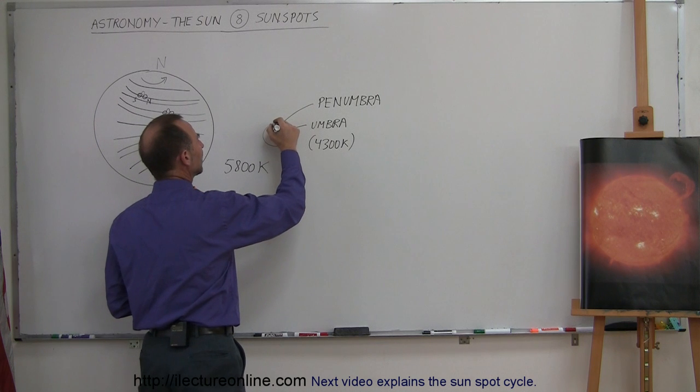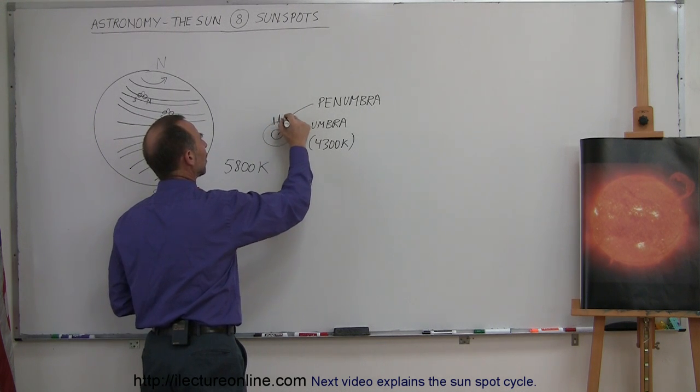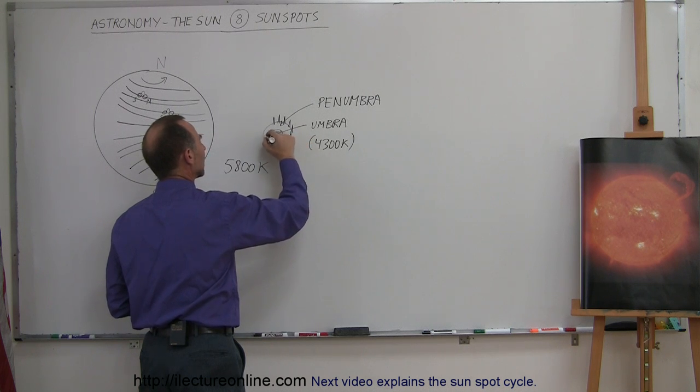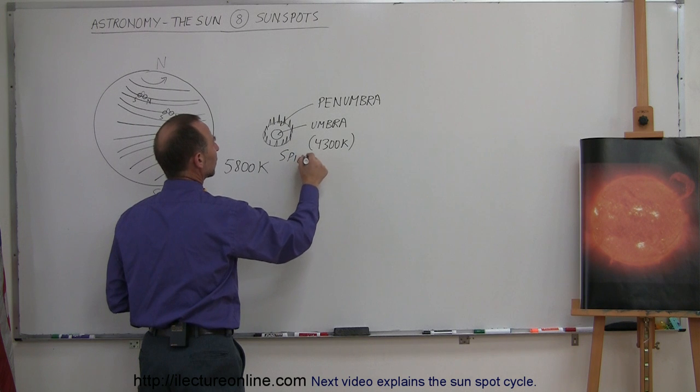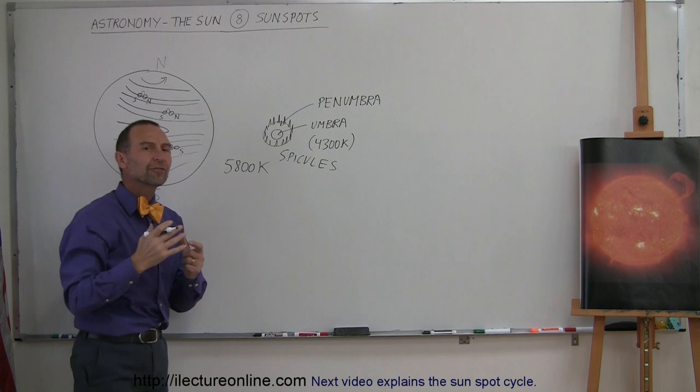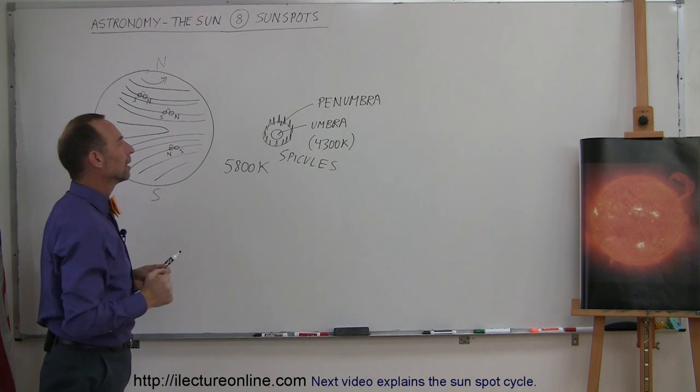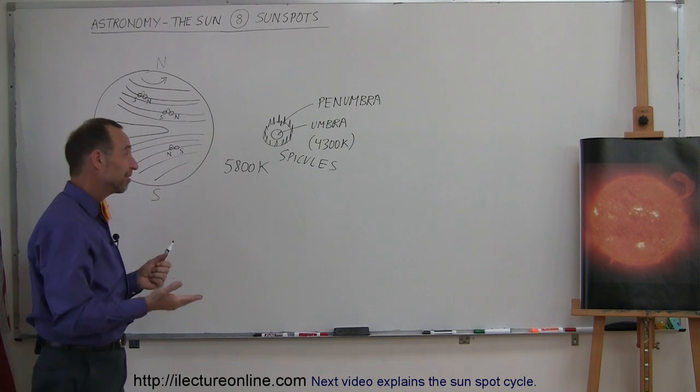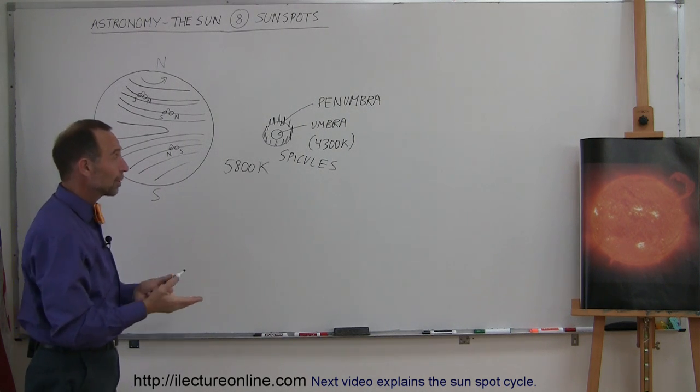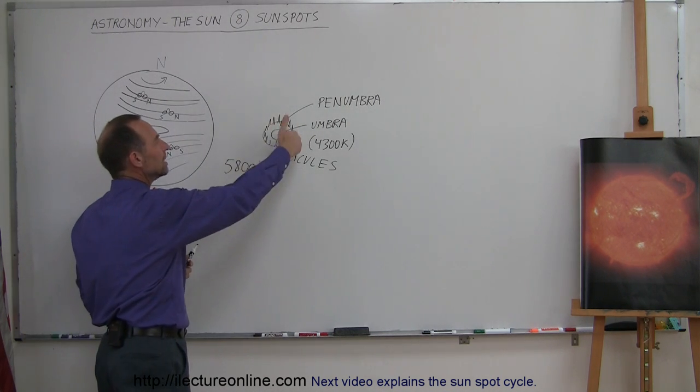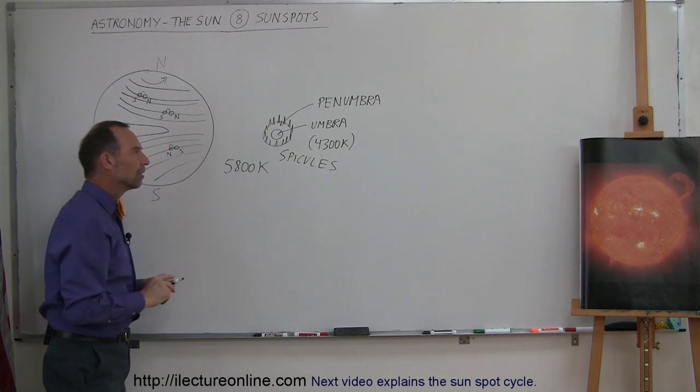Along the edge of the sunspot, we have these flame-like structures that tend to pop up all around. Those are called spicules. Spicules are hot jets of gas that are forced up by the magnetic field lines into the atmosphere of the Sun. They rise up as much as 5,000 to 10,000 kilometers, about 3,000 to 5,000 miles away from the surface. We tend to see a lot of those near the edges of the sunspots.